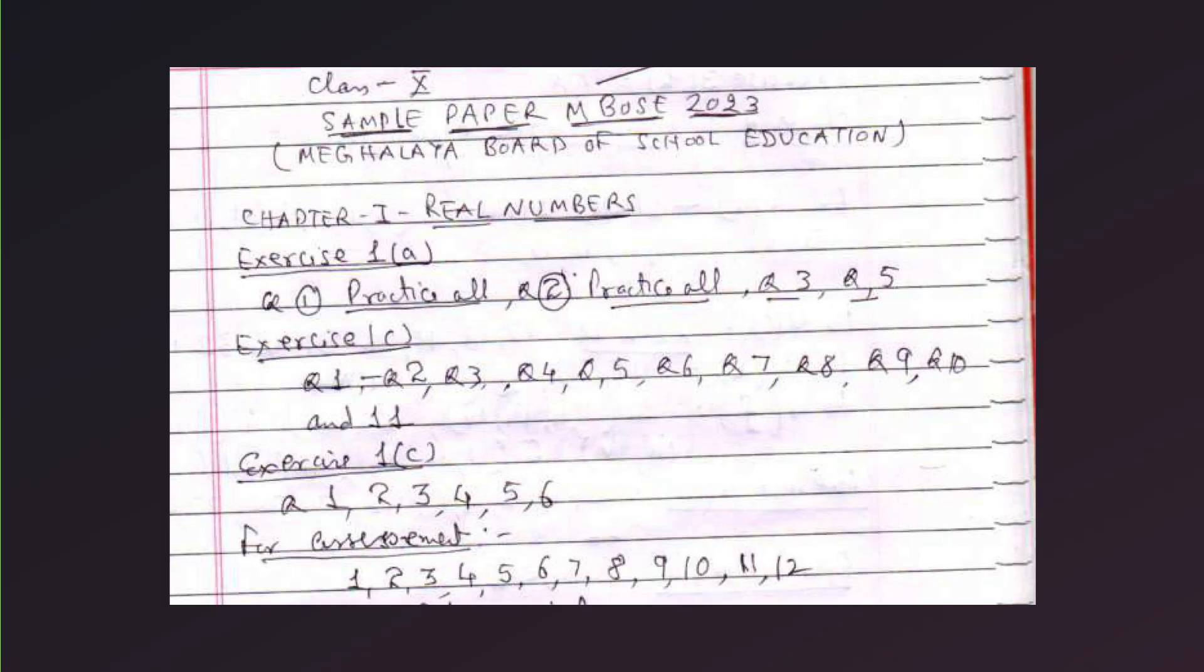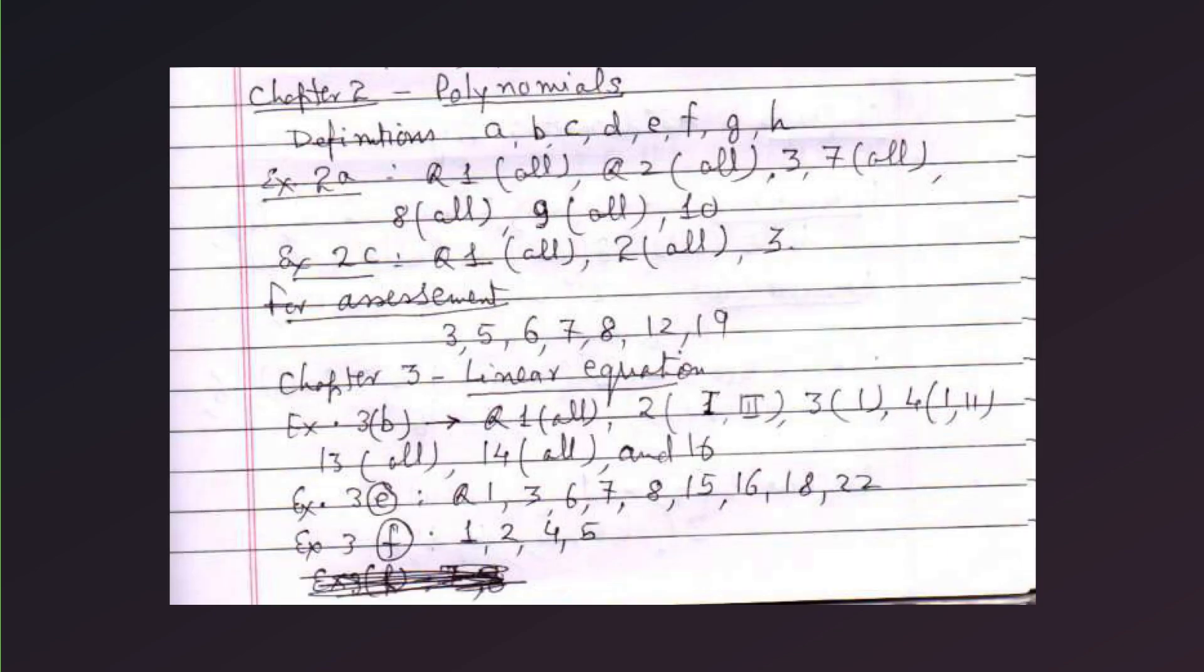Chapter 1, real numbers. Exercise 1A, practice all questions 1 and 2, practice all. Then question 3 and question 5. Exercise 1C, question 1, 2, 3, 4, 5, 6, 7, 8, 9, 10, and 11. Exercise 1C, you have to practice question number 1, 2, 3, 4, 5, 6, and for assessment, you have to practice 1, 2, 3, 4, 5, 6, 7, 8, 9, 10, 11, 12.